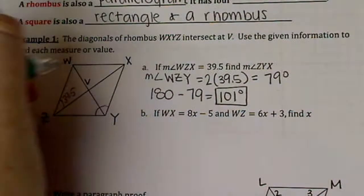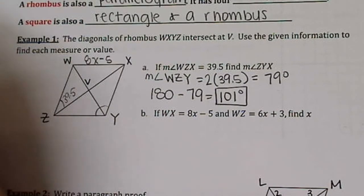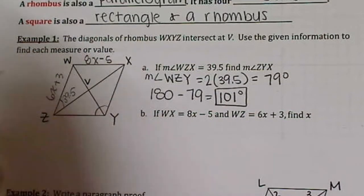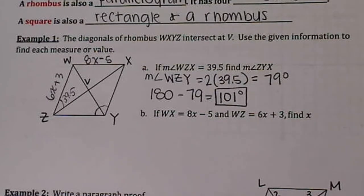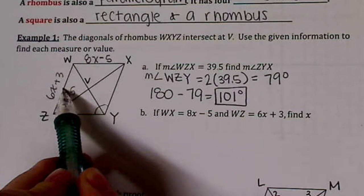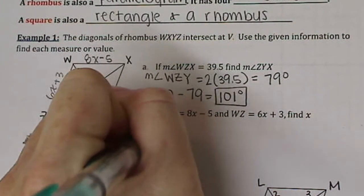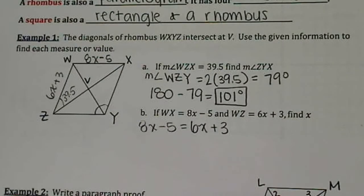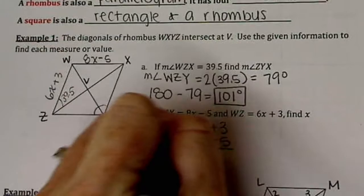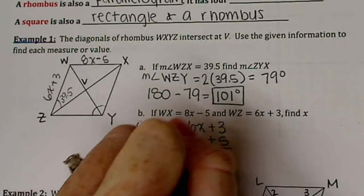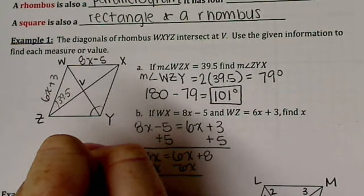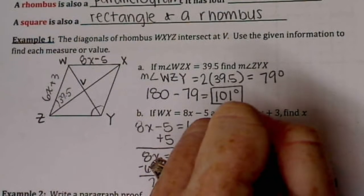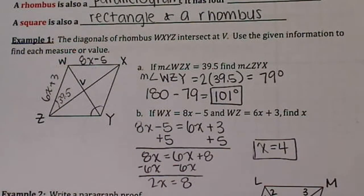Letter B. If WX equals 8X minus 5, and WZ is 6X plus 3, what is X? Well, since we have a rhombus, we know that our sides are all congruent. So let's set these two equations equal to each other. 8X minus 5 equals 6X plus 3. Go ahead and solve for X. You should get that X equals 4, which is what we wanted to know.